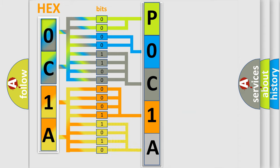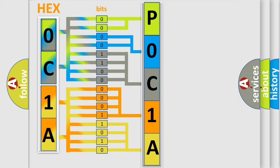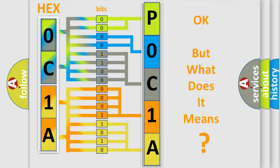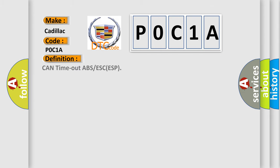A single byte conceals 256 possible combinations. We now know in what way the diagnostic tool translates the received information into a more comprehensible format. The number itself does not make sense to us if we cannot assign information about what it actually expresses. So, what does the diagnostic trouble code P0C1A interpret specifically for Cadillac car manufacturers?